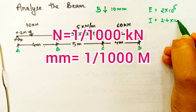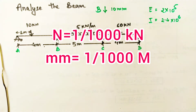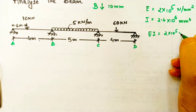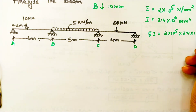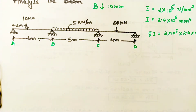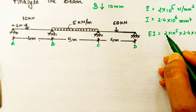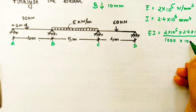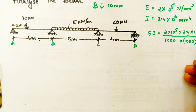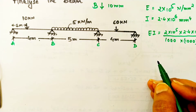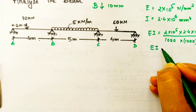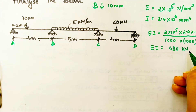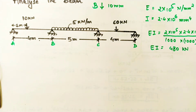We know that 1 Newton is equal to 10 raise power minus 3 kilonewton. For Newton we have divided the equation by 1000 and for mm we have again divided by 1000 raise power 2. After solving this we put it in the calculator and we are going to get a value of 480.